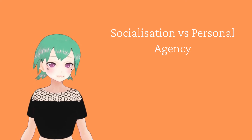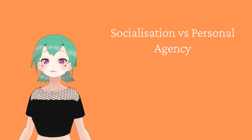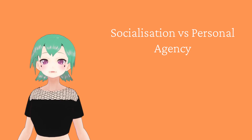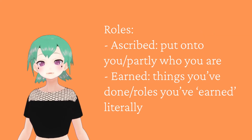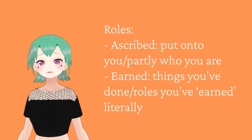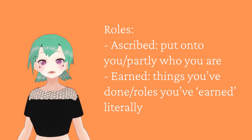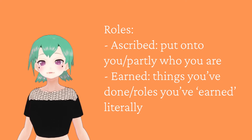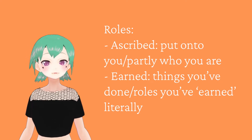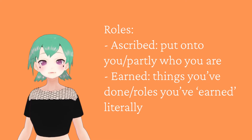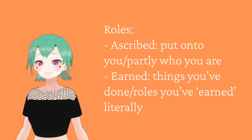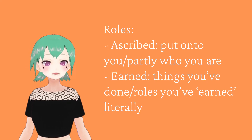And our own individual agency. One division that has a large effect on our social existence is our roles, such as ascribed roles — like location of birth, assigned gender, familiar relations — or earned roles, like occupational titles, educational achievement, or parental status.